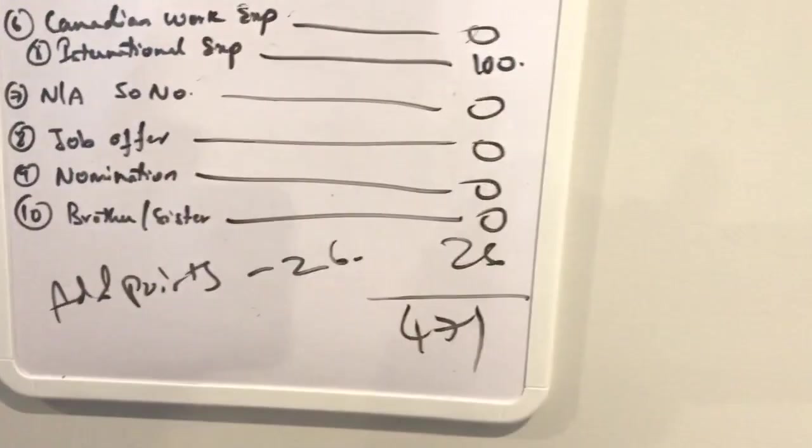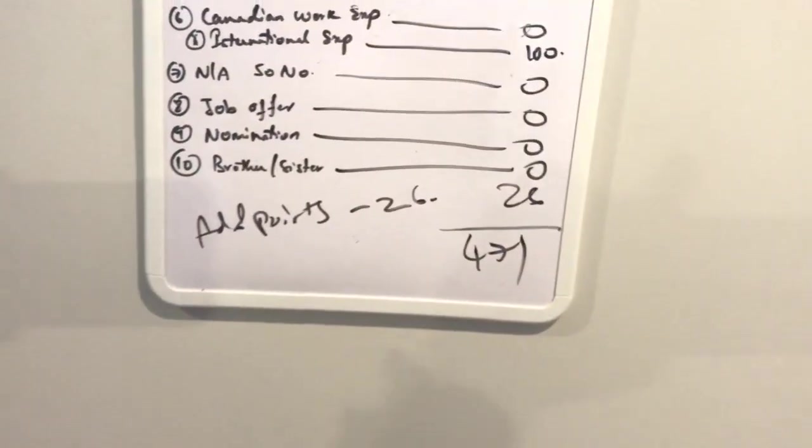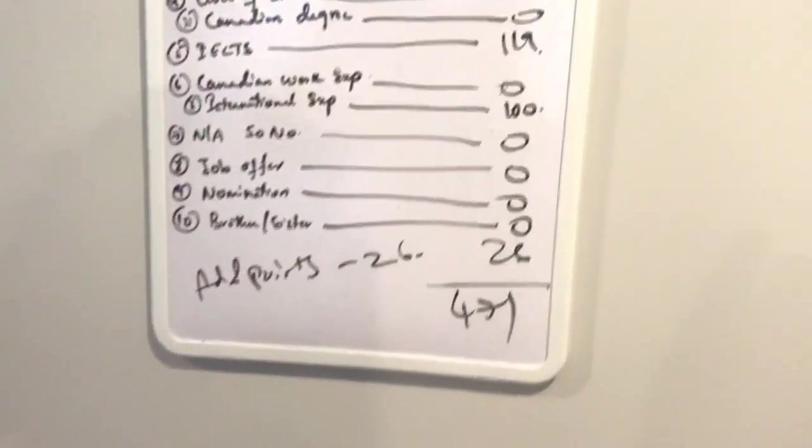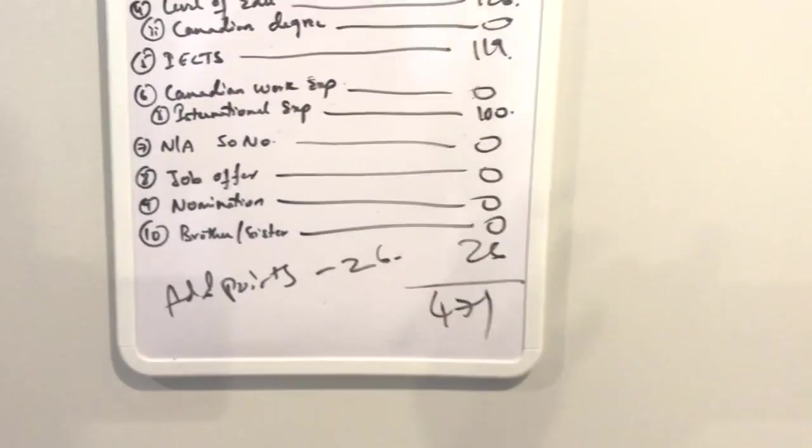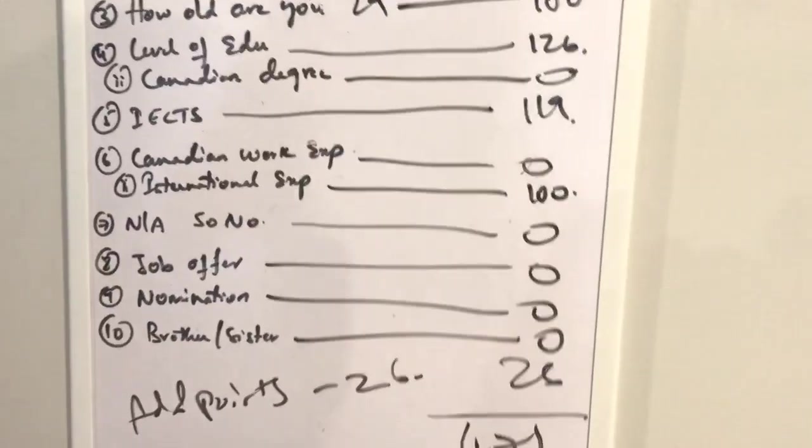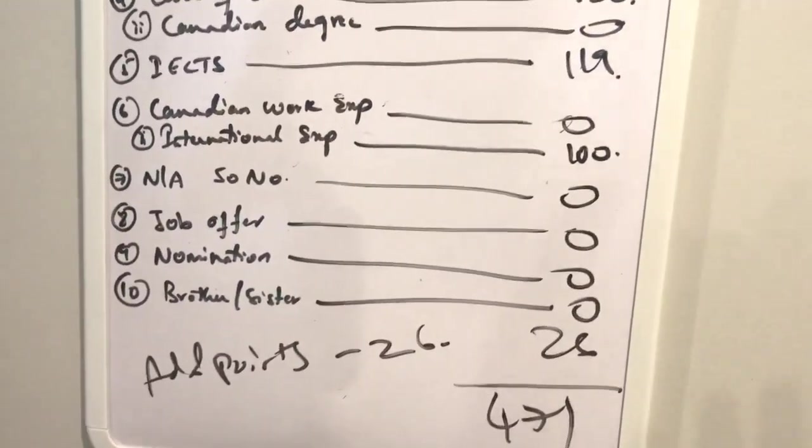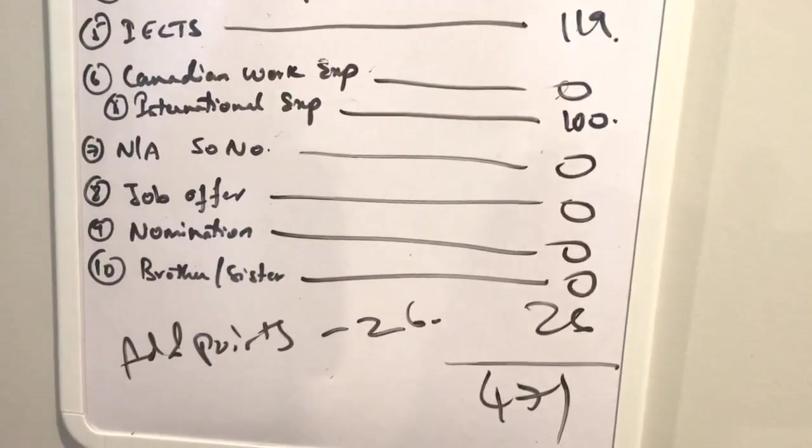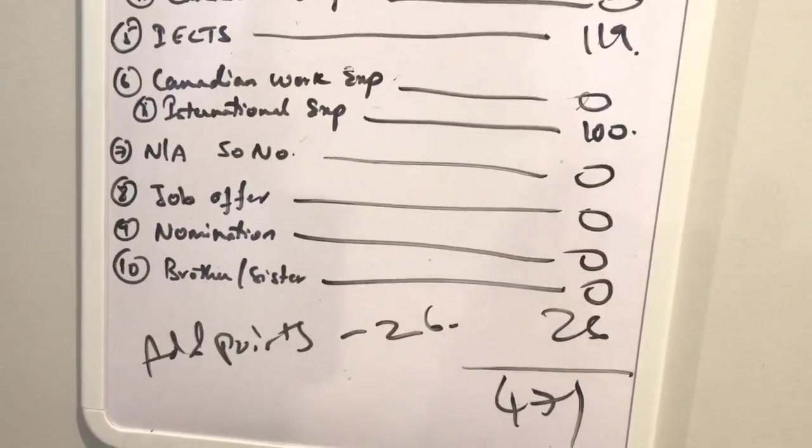Yeah 471, which is also 1 point less than what your actual, but again the criteria only for a person who is 29. Then you can play around.